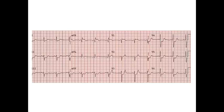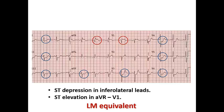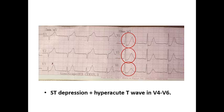In this ECG there is ST depression in the inferior leads — is it non-ST? No, because there is frank ST elevation in AVR and V1. This is a left-main equivalent and this patient should be considered for urgent invasive coronary angiography, treated as STEMI. In another ECG with ST depression in V4, V5, V6, but also hyperacute T-waves — this is DeWinter syndrome, and the patient should be considered as anterior STEMI, not non-ST elevation ACS.